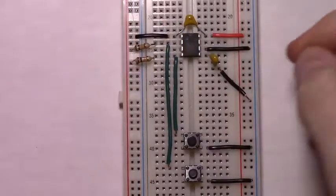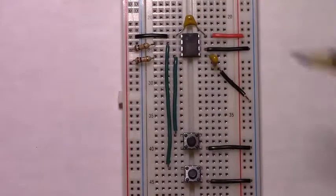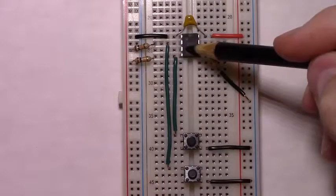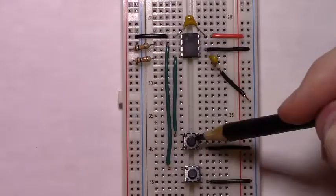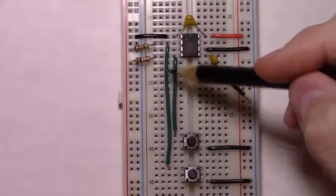At this point, if we added power, we will have the means to toggle the output of pin 3, high or low, using these two buttons. But let's go ahead and connect our LED.